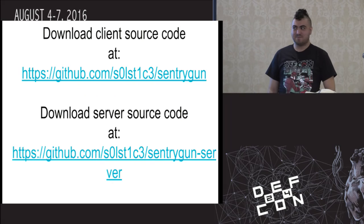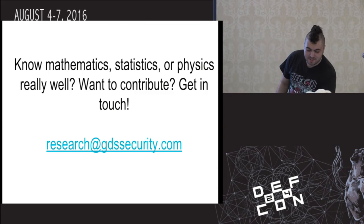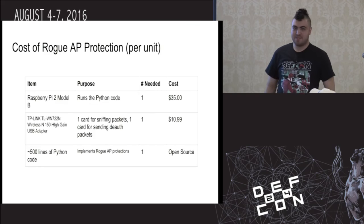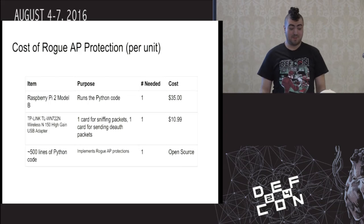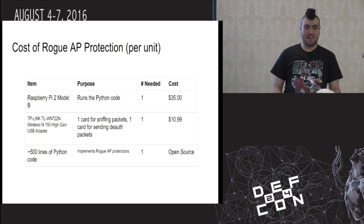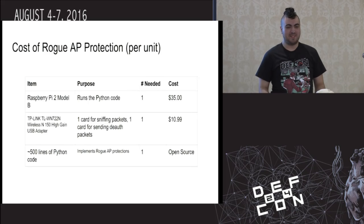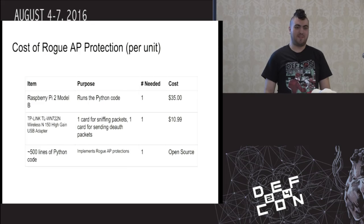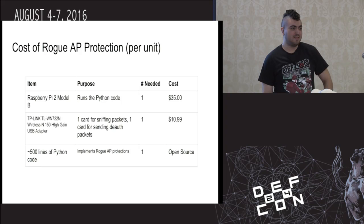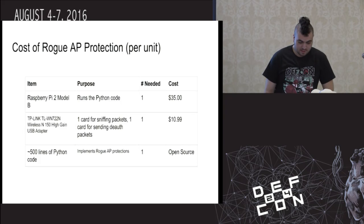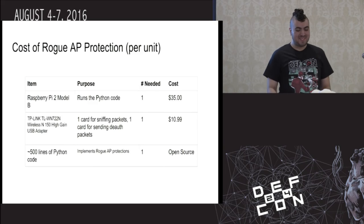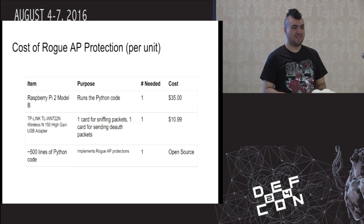Any questions? The TP-Link TLWN722N is an external Wi-Fi adapter you can get on Amazon. It's one of many that do the same thing, but it's basically an external network adapter that's really good at sniffing packets. Question: does it need two cards, one for sniffing and one for deauth? When we started working on this, I thought you'd need two separate cards for sniffing and deauth. Turns out you don't — but with the Atheros cards I have plugged in here, actually you do. I'm not entirely sure why — apparently it's multi-channel. This guy knows Wi-Fi; I know Python.